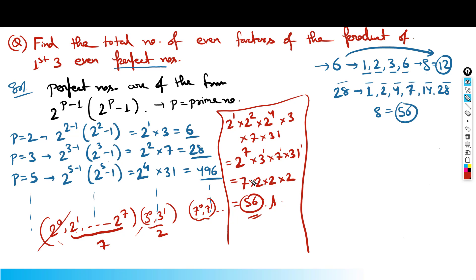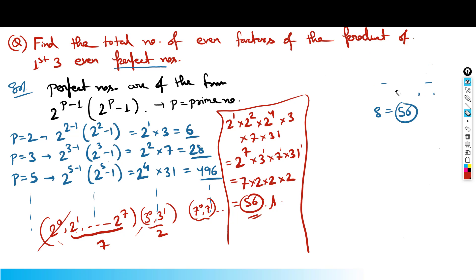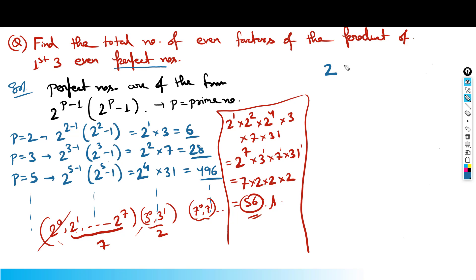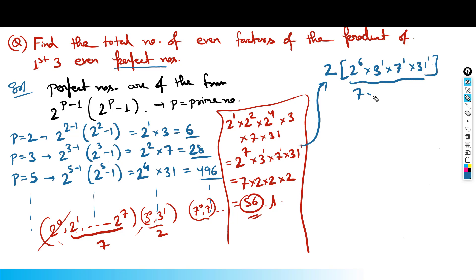One more way to find the number of even factors: take that 2 outside. Once you factor out a 2, you get 2 × (2^6 × 3^1 × 7^1 × 31^1). All factors of the expression inside are automatically multiples of 2, so count total factors inside: (6+1)(1+1)(1+1)(1+1) = 7 × 2 × 2 × 2 = 56. So 56 is the answer.